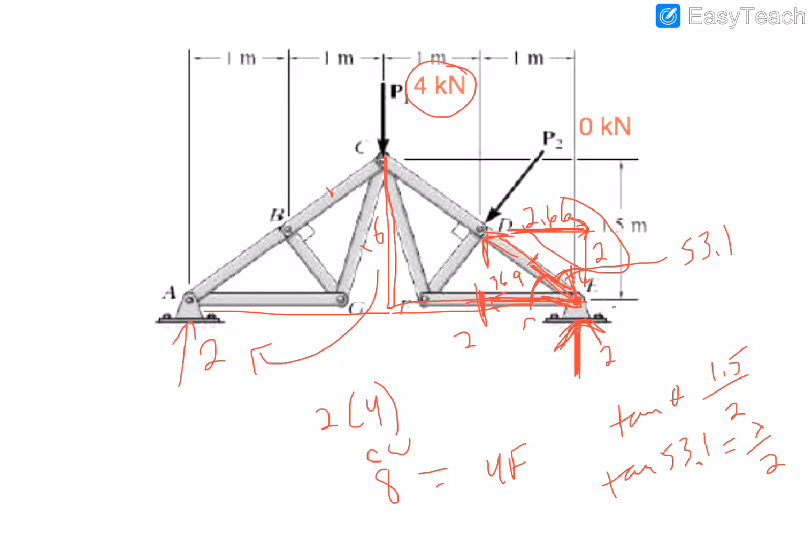If I do the Pythagorean theorem on those two numbers you should get like a negative, well it'll end up being you put a negative on it, 3.33 should be the compression in this member here.